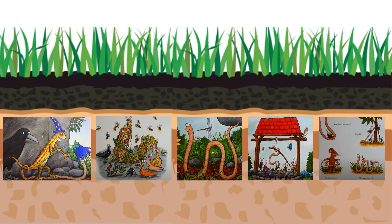If you remember our story mountain, we often start with introducing the character and the setting. Then we get to the top of our mountain and we have a bit of a problem. Then we have to solve the problem and then we find out what happens finally. Maybe if you use those ideas when you're trying to put them in the right order, that might help. You could also watch the video back again and watch out for these pictures and these pages and decide which one comes first and which one comes next.